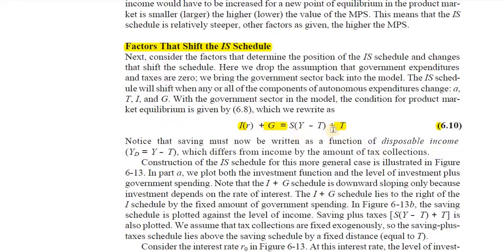The second thing is the taxes component — taxes are a very vital component of our economy. When talking about saving, saving becomes a function of disposable income, not just income. Disposable income means income minus taxes. So saving is a function of income minus taxes, and taxes are added to the saving component. Investments plus government expenditure are injections, and savings plus taxes are withdrawals. Equilibrium condition: I plus G equals savings plus taxes.